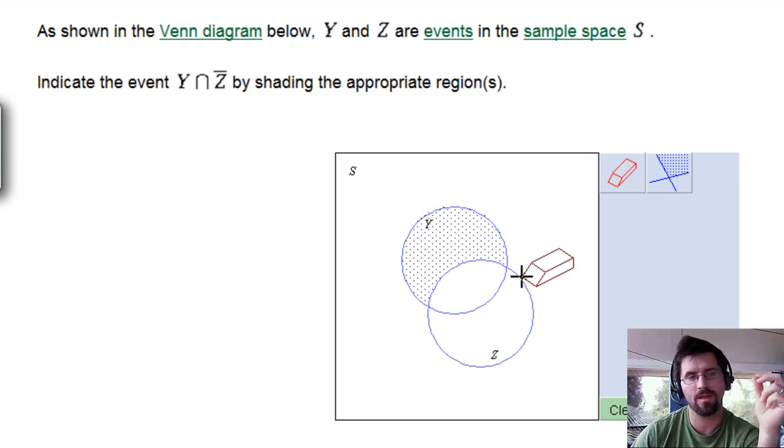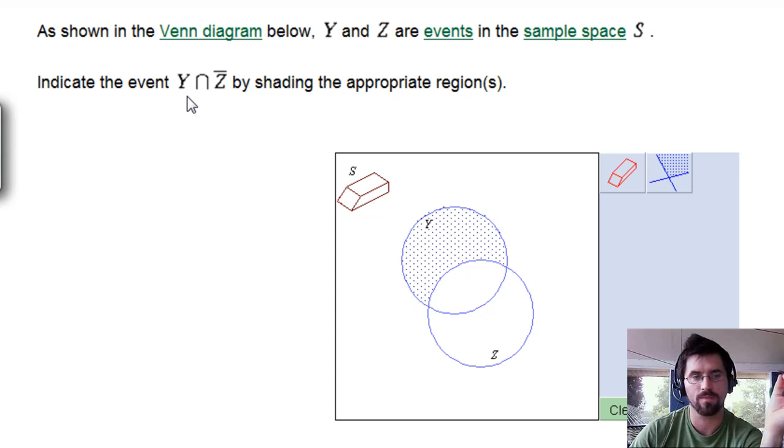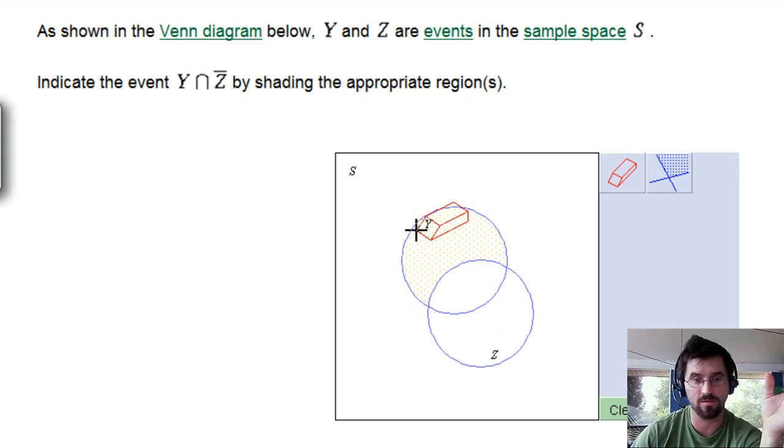So let me give you a verbal translation of what this is saying here. We want to find the events or the regions in this Venn diagram that are part of Y and remember intersection always is synonymous with and or but. Union is always synonymous with or, so you can interchange that. So I'm looking for the region that is part of Y and not part of Z. So it's got to be in Y but not in Z. And so that leaves me just this little moon-shaped object here.